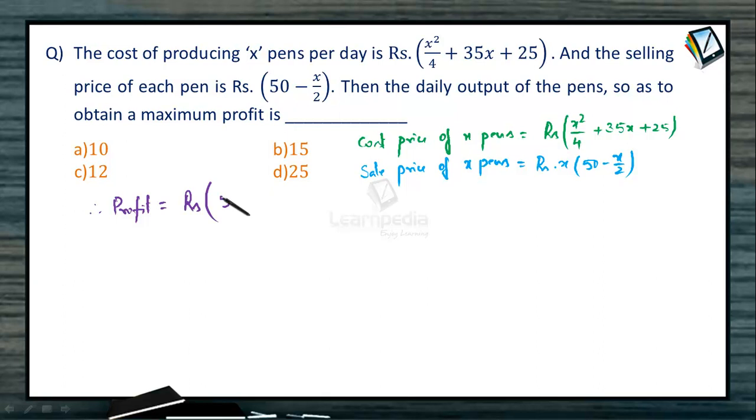So it is rupees 50x - x²/2 - x²/4 - 35x - 25. Let's simplify this. This is rupees -3/4 x² + 15x - 25.